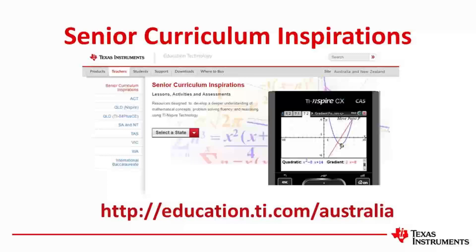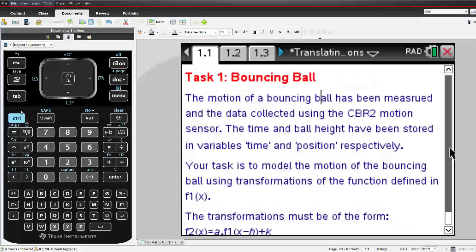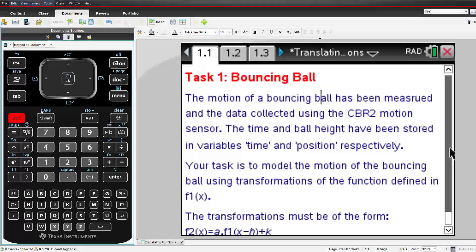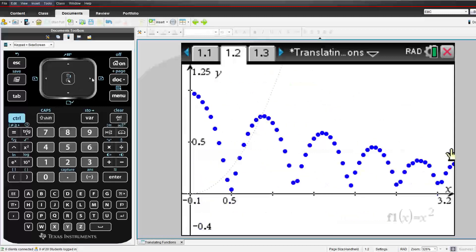Today we're looking at transformations of functions. The activity file contains lots of data collected using a motion sensor and also a voltage probe. While this data is very easy to collect, the purpose of the activity is to focus on transformations. So the data and corresponding primitive functions are set up already. Students use transformations of the primitive function to model the data.